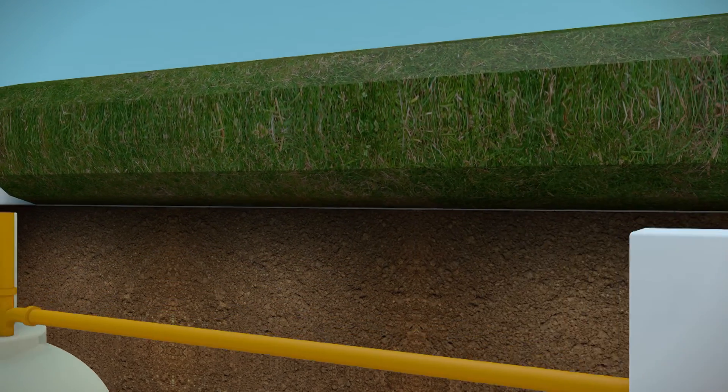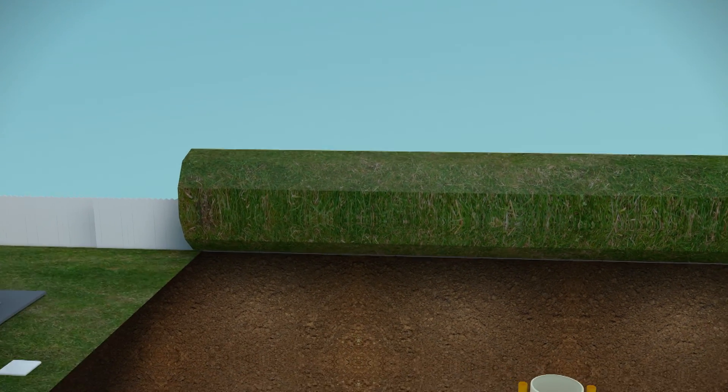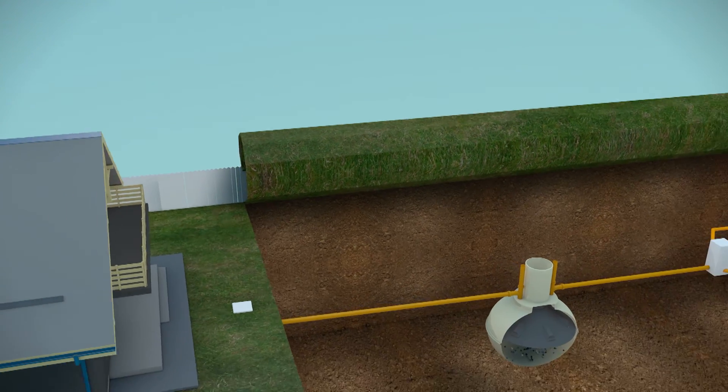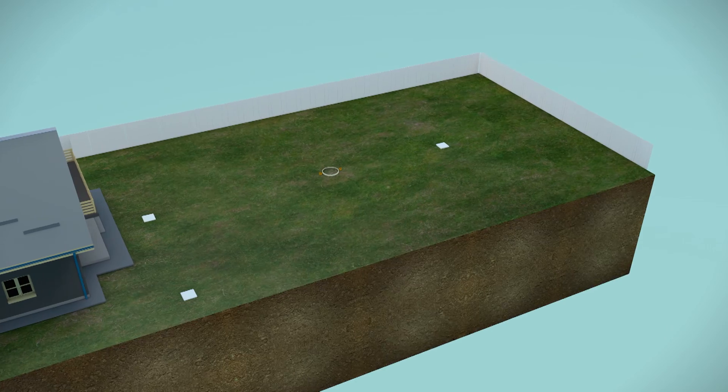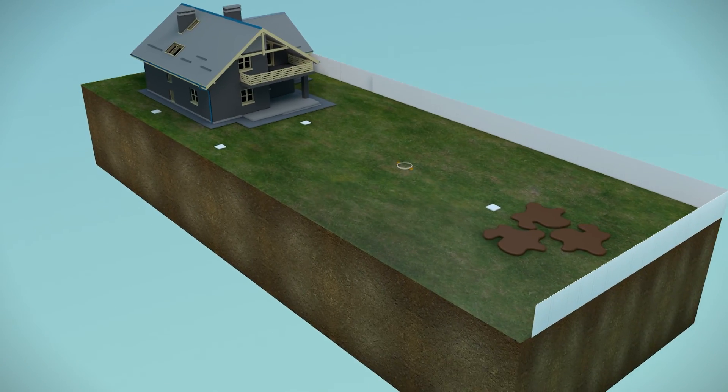The soak away system will continue to fill with the waste from the septic tank and either quickly backs up through the system and into the property or finds its way to ground level and starts to pool on the surface above the soak away.